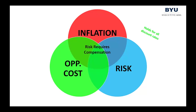I want to propose a fundamental axiom of finance: risk requires compensation. If you buy into this fundamental axiom, I hope you can see that those three concepts — opportunity cost, risk, and inflation — are all the same thing. The right discount rate has to somehow be driven by the riskiness of the cash flows.